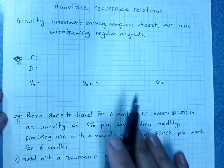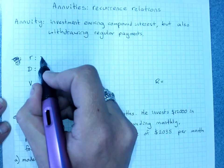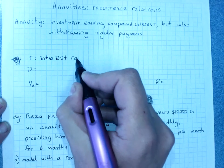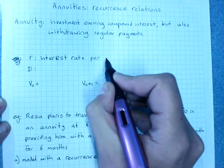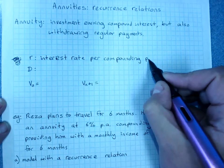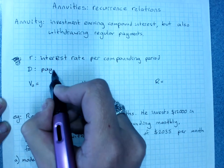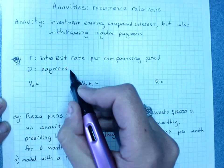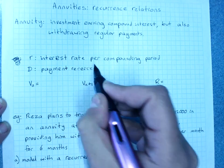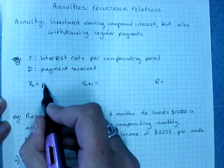So we're often talking about super payments. Now we are looking at annuities with a recurrence relationship. R is our interest rate per compounding period. D is our payment received. So these are the payments you're getting throughout the term of the investment. And our value at zero is of course our principal.